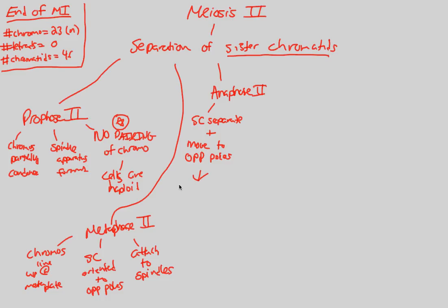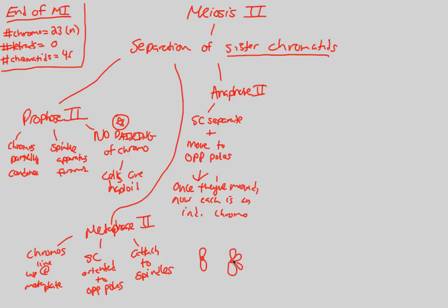Once they've moved to opposite poles, each is now an individual chromosome. An easy way to determine whether something is a chromosome or a chromatid is to count the number of centromeres. If something has an independent centromere, it is a chromosome. Two sister chromatids sharing one centromere count as one chromosome. Counting centromeres will almost always give you the correct chromosome number.